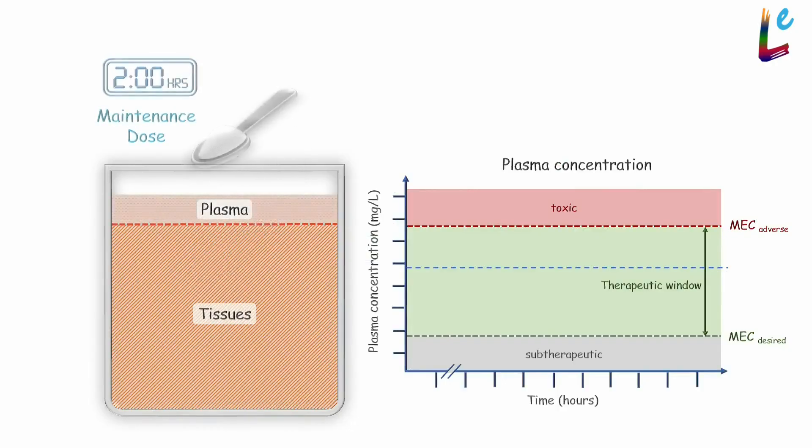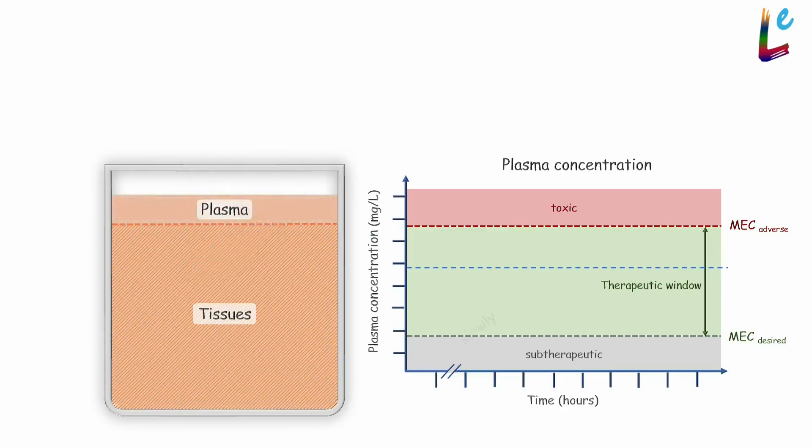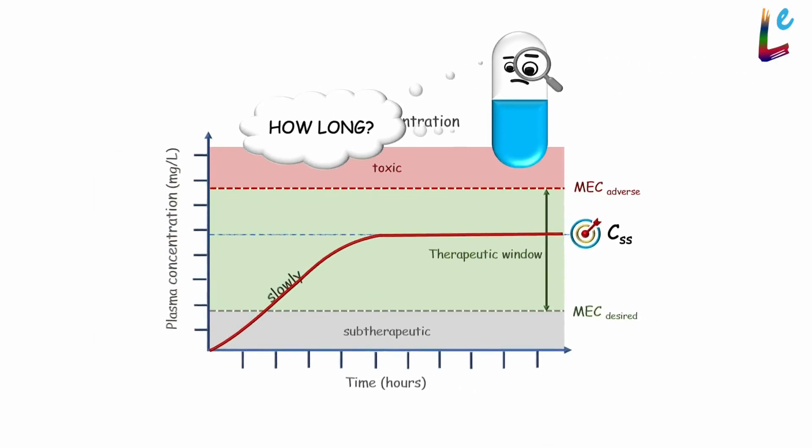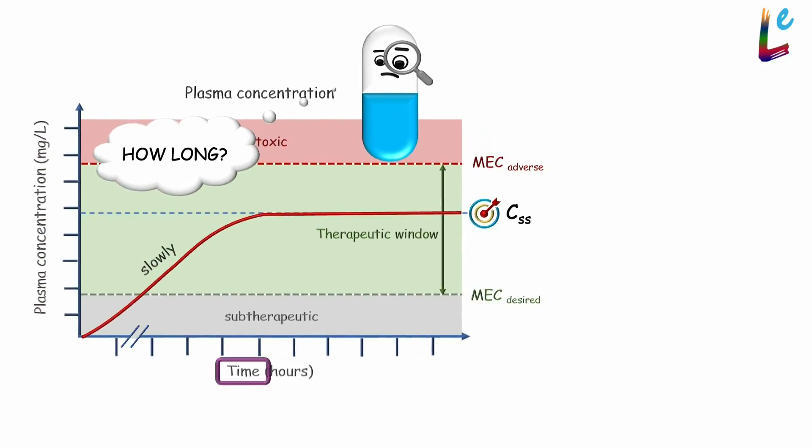When a drug is administered solely at maintenance dosing rates, it takes much longer to reach the desired steady state concentrations. But how much longer? To answer this, we need a pharmacokinetic perspective of time, which is provided by the parameter known as half-life or t-half. We will explore this further in the next video.